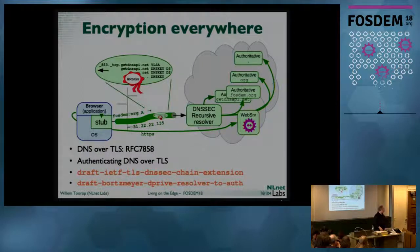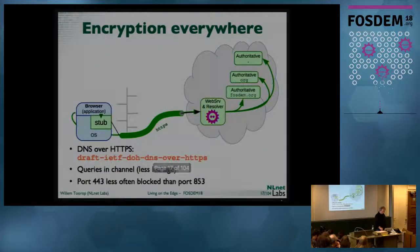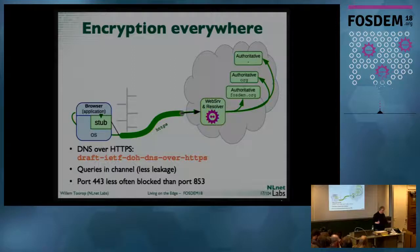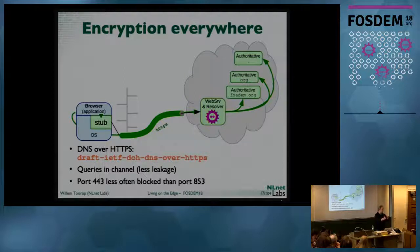This is also mentioned in a new draft that talks about securing the path between the resolver and the authoritative. Another interesting IETF effort is DNS over HTTPS — it runs on the HTTPS port, so it's probably less hampered than the port for DNS over TLS. All queries in the context of visiting a certain page go over this channel to that specific website. I think this has a lot of potential and we should track it very closely.